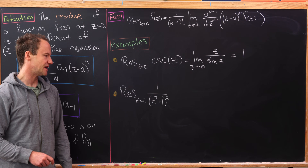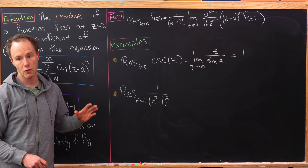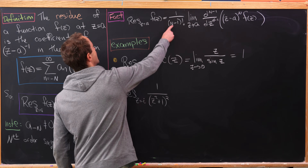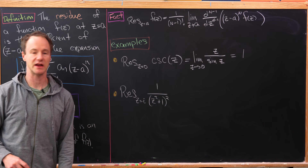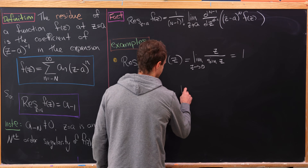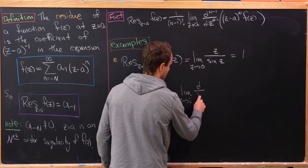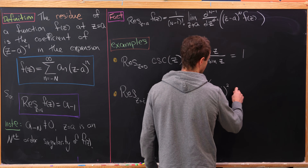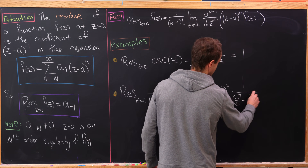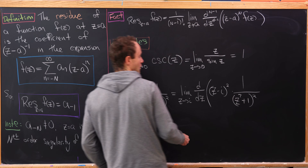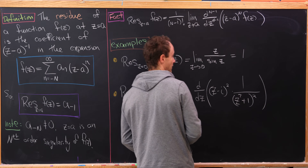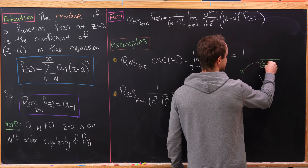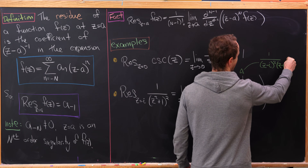Now the residue at z equals i of 1 over (z² + 1)² — this is a second order singularity or second order pole, so we need to use the version of the formula where capital N equals 2. We can factor z² + 1 over the complex numbers as (z minus i)² times (z plus i)².